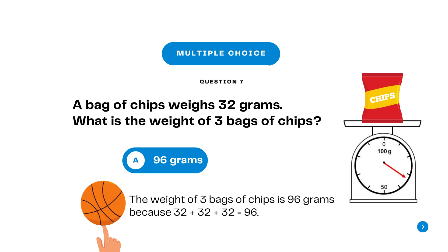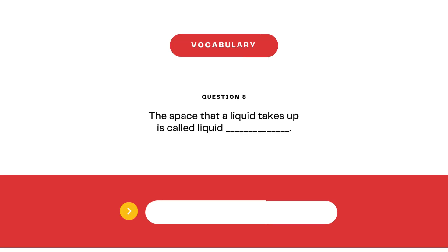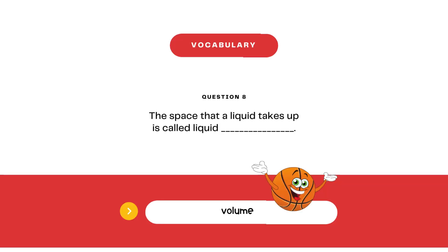Answer A. 96 grams. The weight of three bags of chips is 96 grams because 32 plus 32 plus 32 equals 96. Question 8, vocabulary: The space that a liquid takes up is called liquid blank. Pause and play.